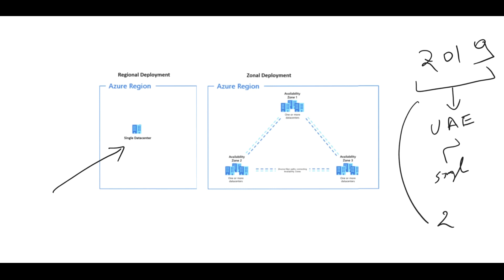After two years, around 2021, Microsoft introduced availability zones in the UAE region. This means that within UAE North, there are now three data centers. Customers can deploy their workloads across these availability zones — across three different data centers — so even if there is an outage in one particular data center, there is no impact and services remain available across the other data centers.